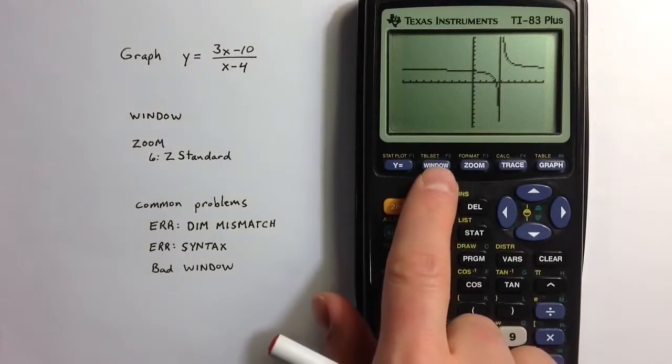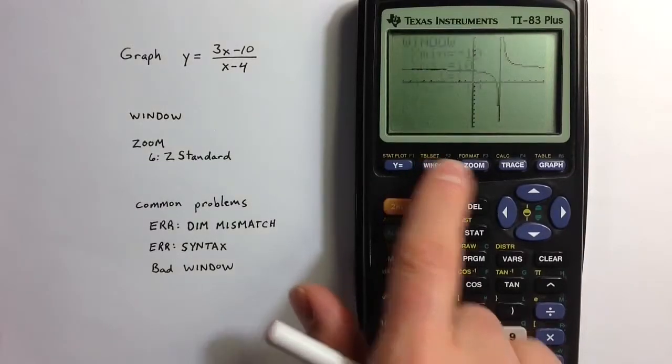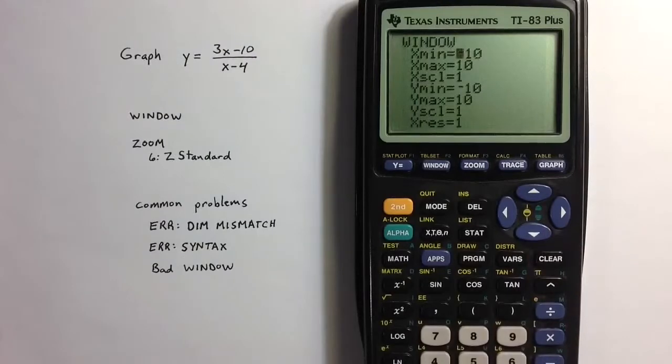Adjusting the window does make that mistake go away. We can adjust the window in a way that will make that mistake go away. If I change the minimum value to negative 2...